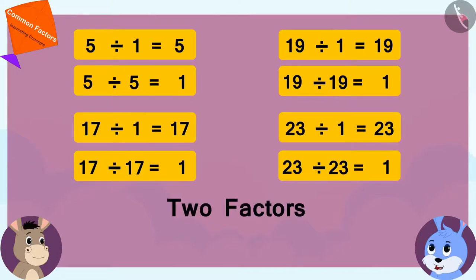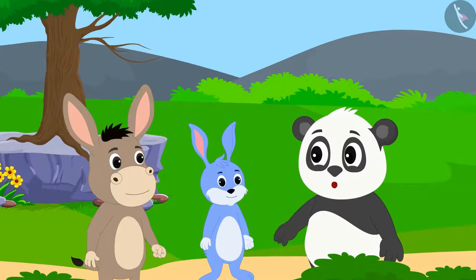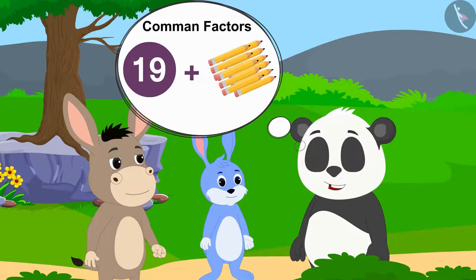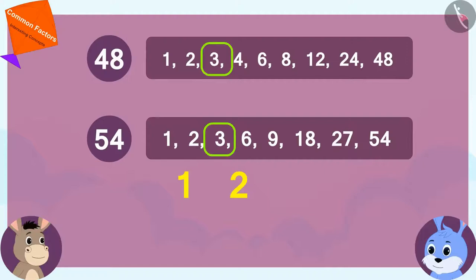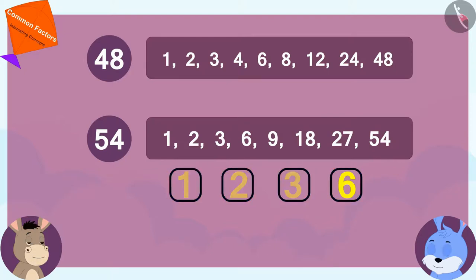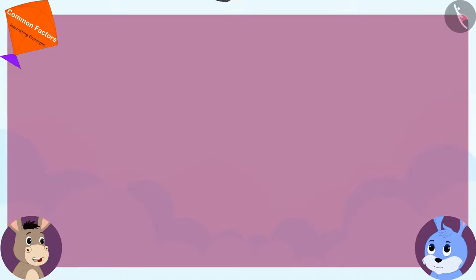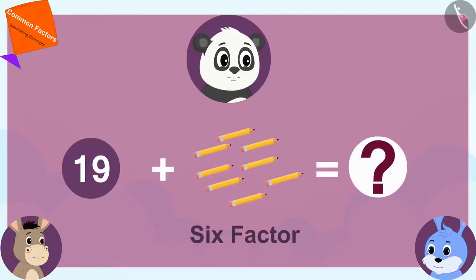Golu told Bunny and Bola, I have a solution for this. Why don't I add more pencils to these, so that we can get even more common factors in these three numbers? Bola and Bunny liked Golu's suggestion very much. Bola immediately found the common factors of 48 and 54. These numbers are the common factors of 48 and 54, and 6 is the highest common factor of these numbers. So, we have to increase the number of Golu's 19 pencils in such a way that the increased number also has 6 as a factor.